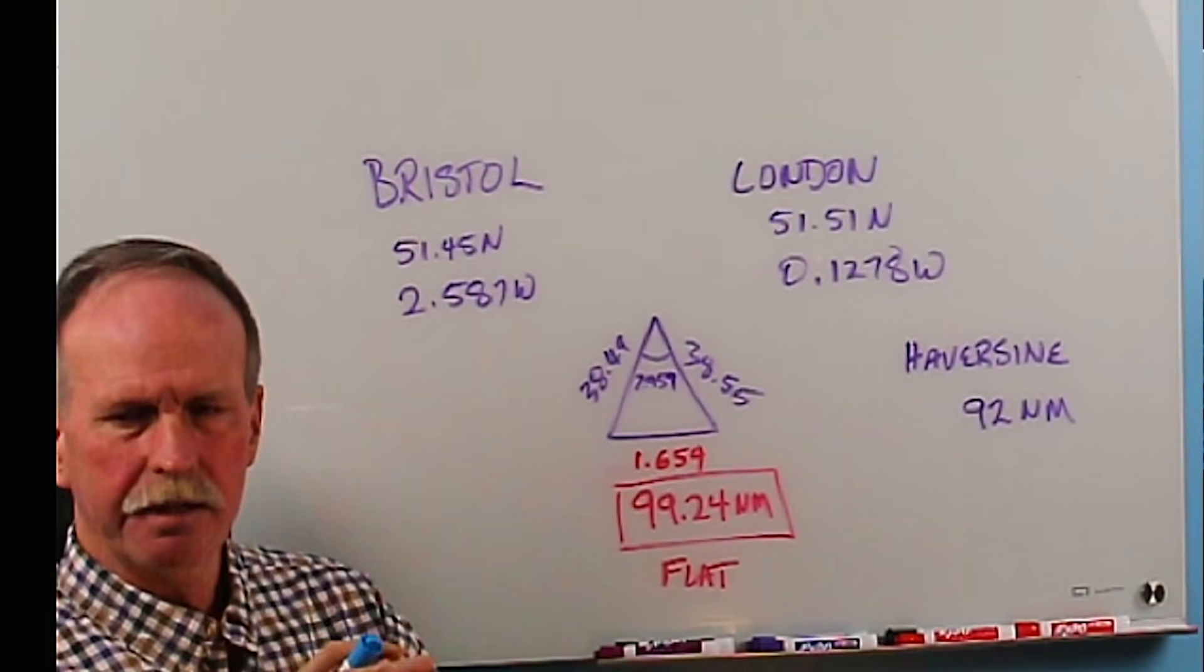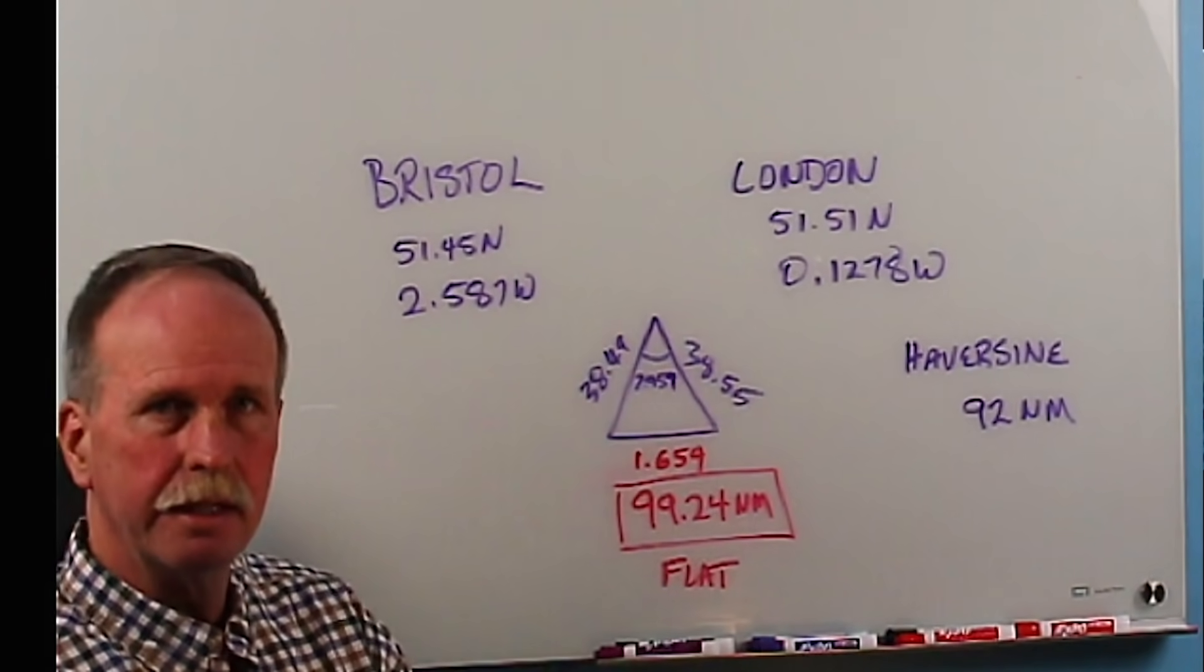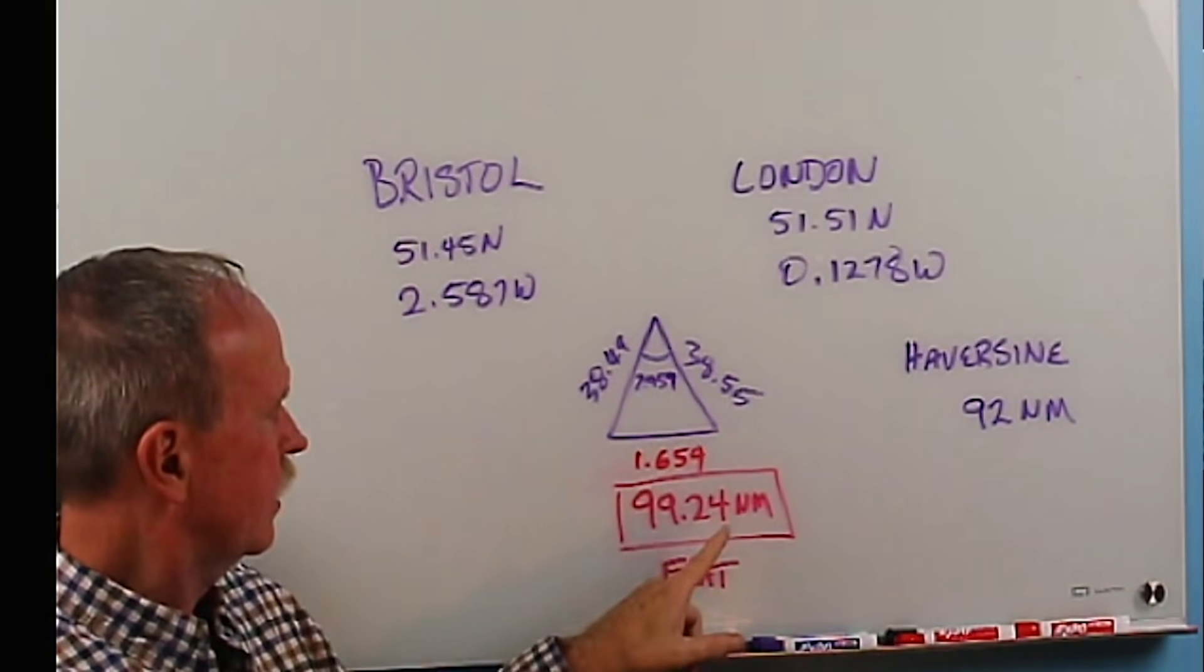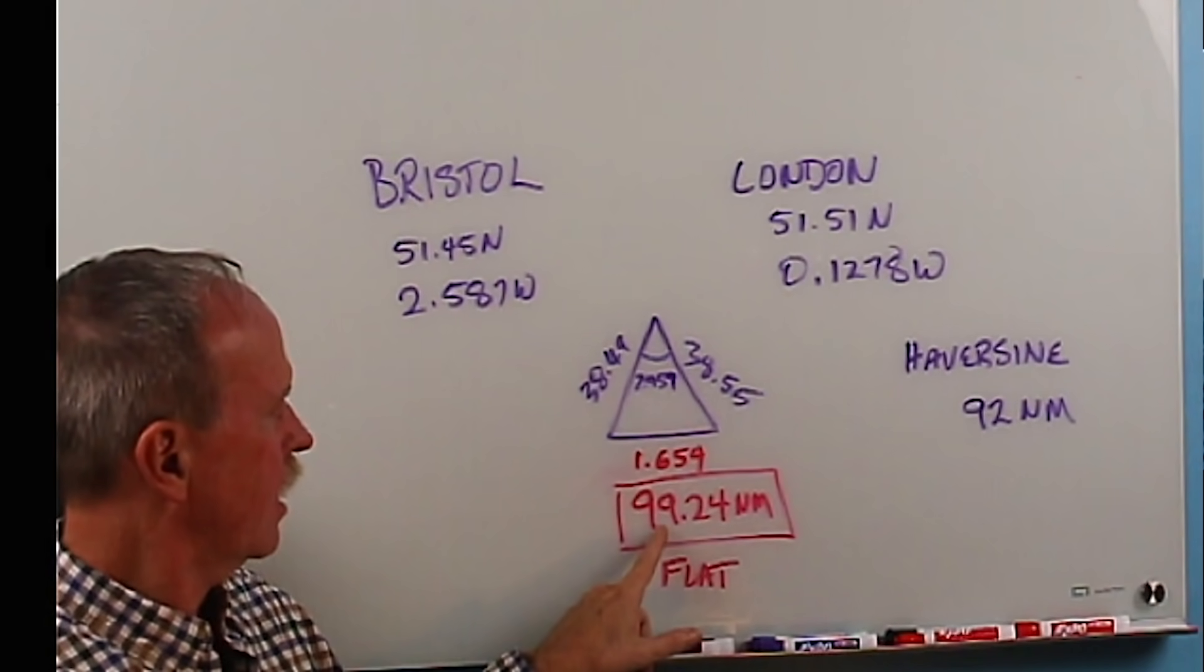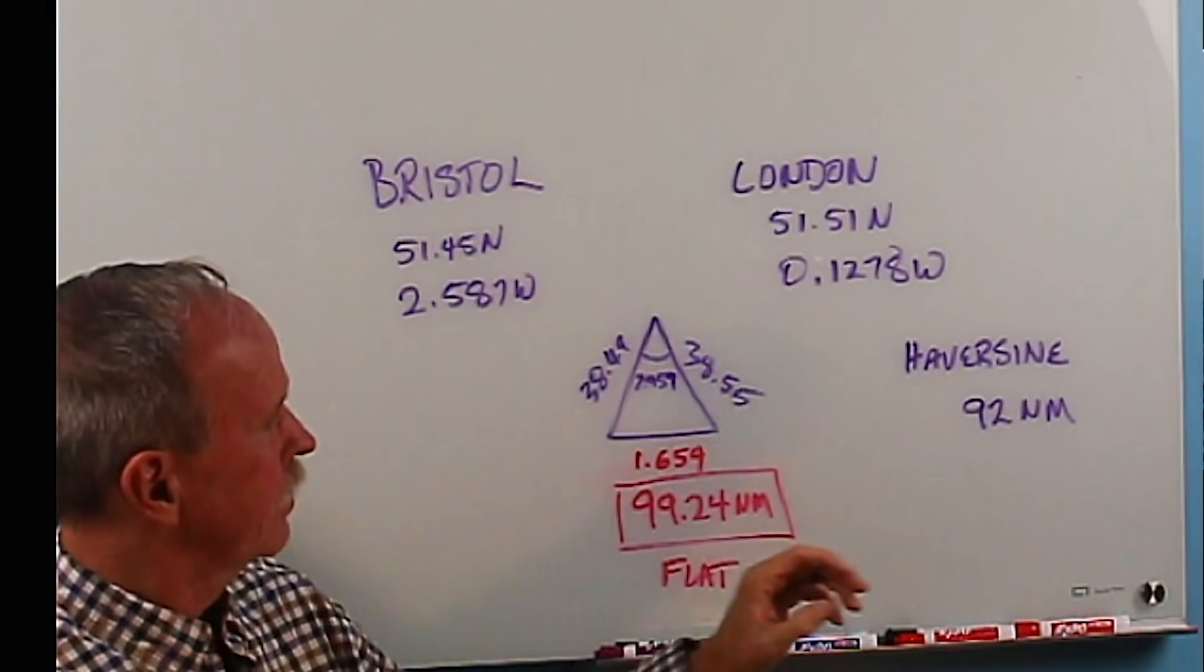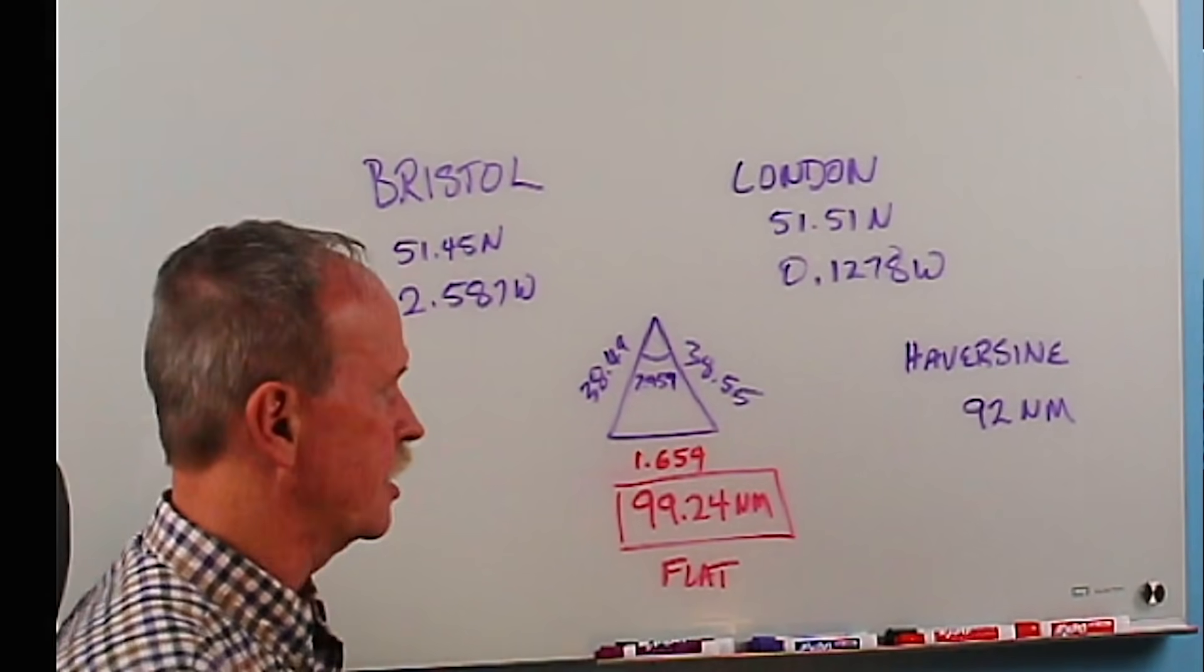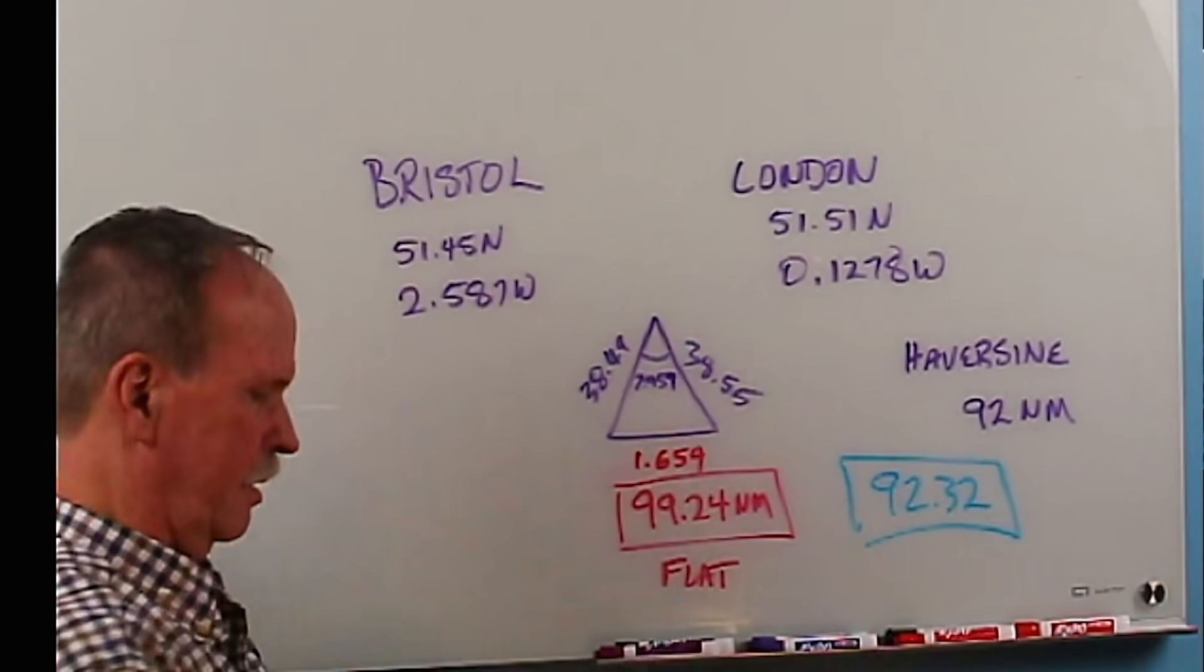Now in the final example, let's take one that we did earlier and that is the distance between London and Bristol in the UK. Here are the coordinates for both cities. On the flat earth, here's the triangle that you would have to set up to find the distance between those two locations on a flat earth on a flat plane of 99.24 nautical miles. The Haversine formula says the distance between those two longitude and latitudes is 92 miles. The actual Google Earth distance is 92.32 nautical miles.